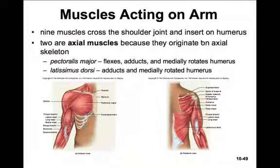Now we'll move into the muscles acting on the arm. There are nine muscles that cross the shoulder joint and insert on the humerus. Two are axial muscles because they originate on the axial skeleton: the pectoralis major and the latissimus dorsi. The pectoralis major flexes, adducts, and medially rotates the humerus, whereas the latissimus dorsi adducts and medially rotates the humerus towards the back side of the body.